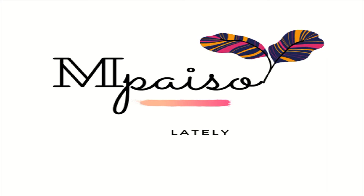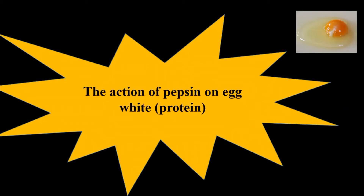Hi, this is your biology tutor. Our topic for today is the action of pepsin on egg white, or rather on protein. Up here we have our egg — the yellow part is your yolk, and the white part is your egg white. We are focusing on the egg white, which is the protein.